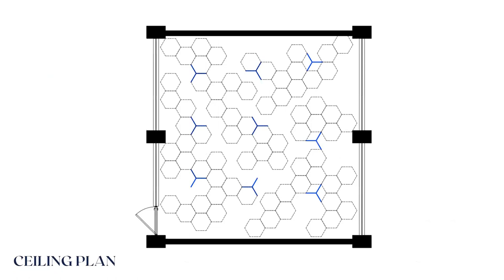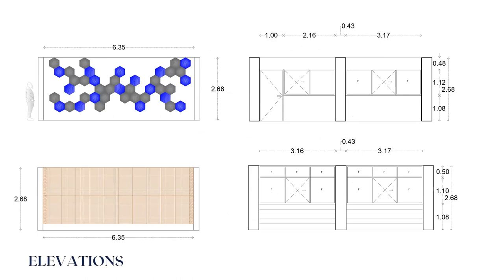In the ceiling plan, we used wood-sisal panels at different heights. You will see it later in the sections. We also implemented new light fixtures.